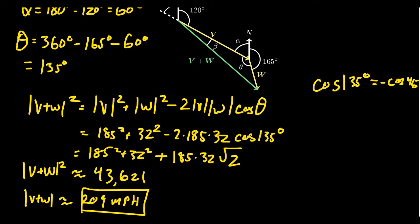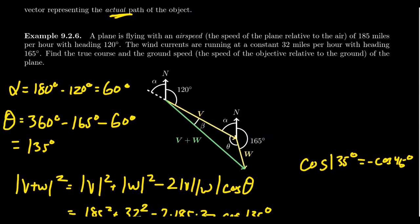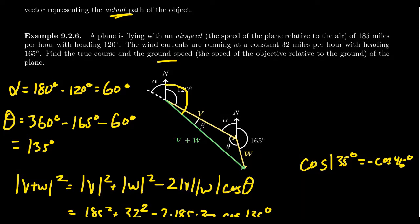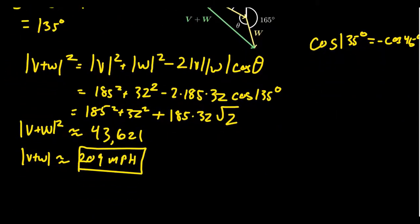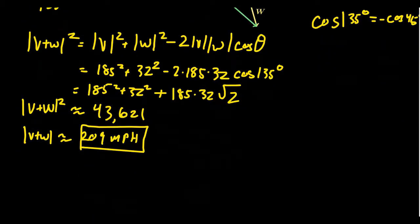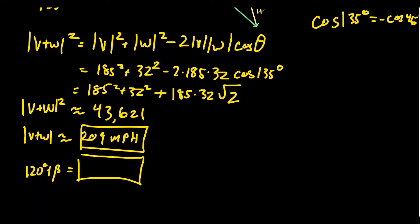That gives us the ground speed, but the true course is a vector — we also need its direction, expressed as a heading. The heading of V plus W will be 120 degrees plus beta, where beta is the angle between V and V plus W. We now know all three sides of the triangle, so we can switch from the law of cosines to the law of sines to find beta.